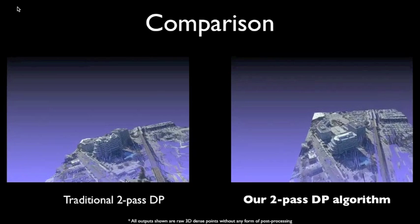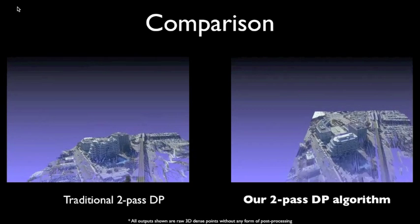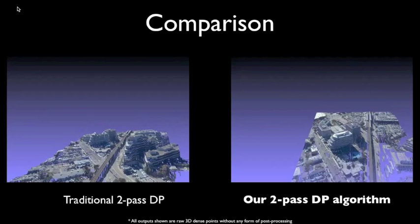On the right, since our algorithm constrains the reconstruction along the directions of salient linear features, building facades and the linear patterns within them are accurately reconstructed.